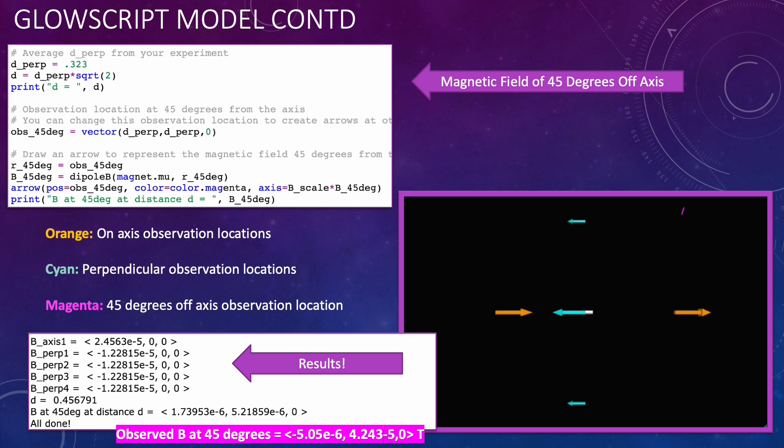Here you can see my results. The orange arrows represent the magnetic field vectors at the on axis observation locations. The cyan arrows represent the magnetic field vectors at the perpendicular observation locations and the magenta arrow in the top right shows the magnetic field vector for the 45 degrees off axis observation location.